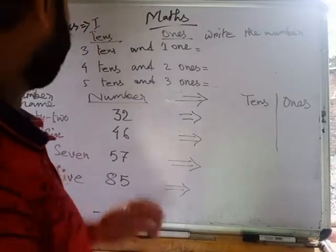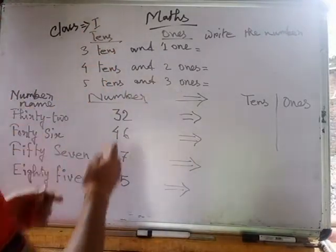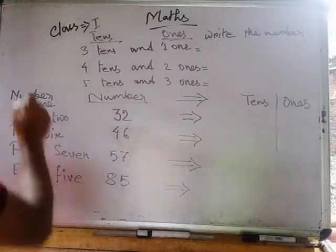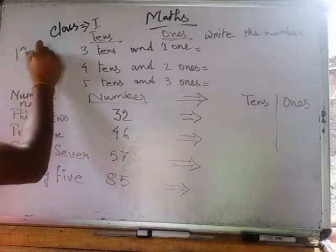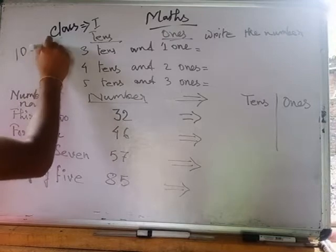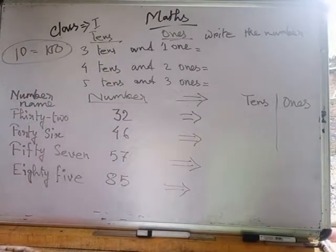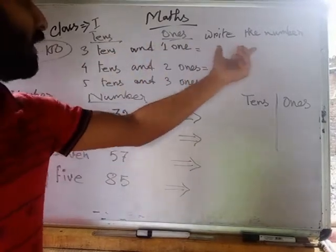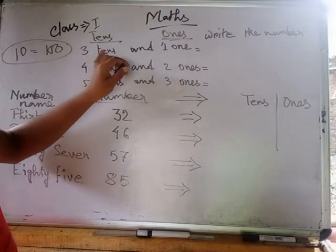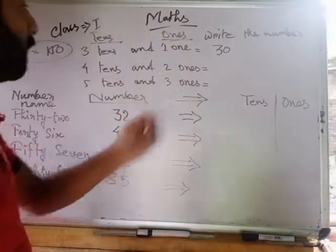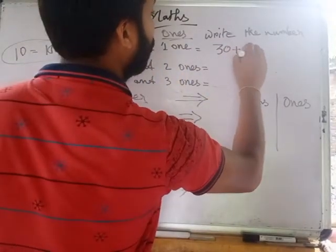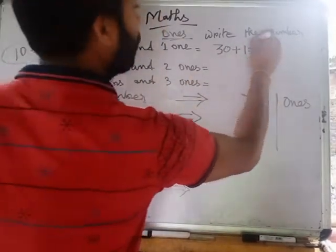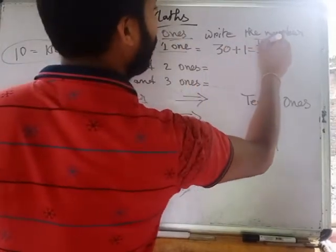Good morning, my dear students. Today I have a Class 1 math lesson on how to write the tens, ones, and number names for numbers from 10 to 100. First, I will tell you how to write numbers using tens and ones. For example, three tens means 30. If it is 31, that means three tens and one one — three tens, that is 30, is at the place of tens, and one one, that is 1, is at the place of ones.